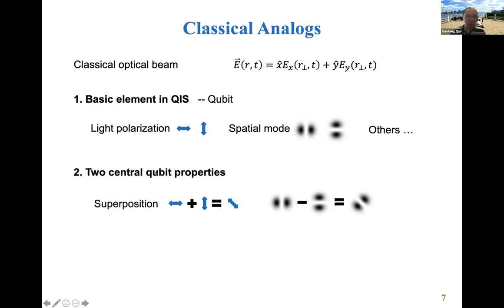And for the second essential element for quantum information is called superposition here. And of course, superposition also exists in a classical wave system. You have different oriented polarizations. You have different orientations of your spatial modes. So that's superposition.